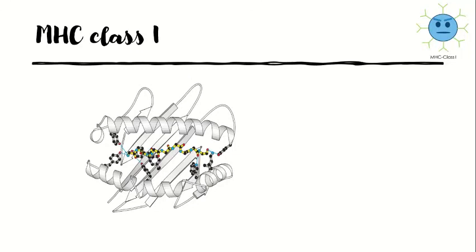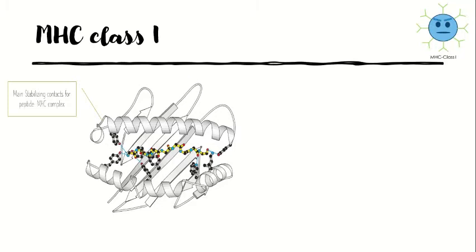Binding of a peptide to an MHC class 1 molecule is stabilized at both ends of the peptide binding cleft by contacts between atoms at the free amino and carboxy terminals of the peptide and invariant sites found at each end of the cleft in all MHC class 1 molecules. These are the main stabilizing contacts of the peptide–MHC complex. Synthetic peptides lacking either the amino or carboxy terminal fail to bind to the MHC complex.